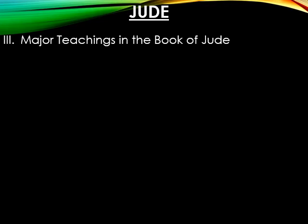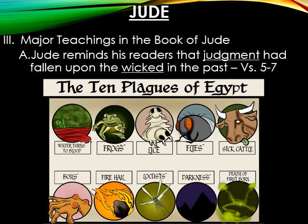Now let's look at the major teachings in the book of Jude. Jude reminds his readers that judgment had fallen upon the wicked in the past — particularly concerning false teachers. He gives three examples: first, the judgment upon the Egyptians prior to the Exodus, commonly called the ten plagues of Egypt; second, the judgment of certain angels locked in spiritual chains, likely a reference to Genesis 6 where the sons of God took the daughters of men as wives; and third, the judgment of Sodom and Gomorrah and surrounding cities.